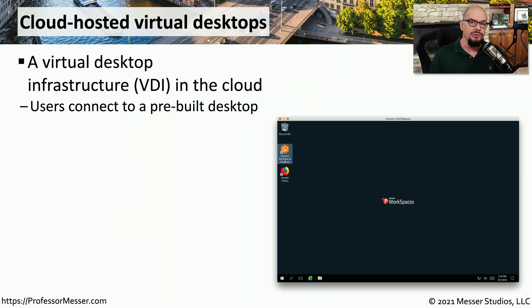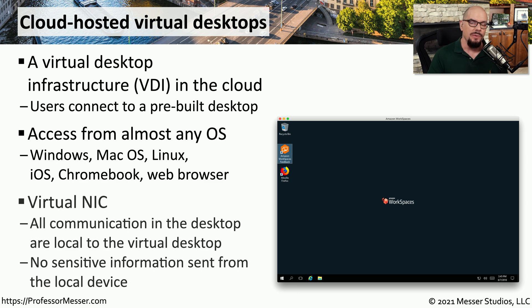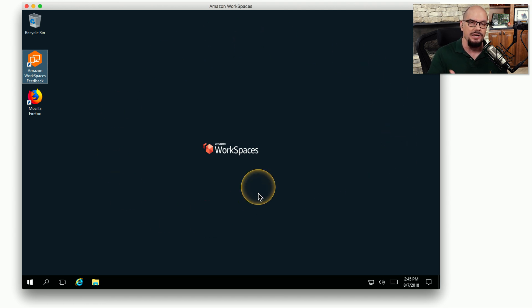In some environments, users don't have a full-size desktop or laptop at their desk. Instead, they have a thin client and connect to a virtual desktop infrastructure, or VDI. If you move that VDI to the cloud, you can have a cloud-hosted virtual desktop and access nearly any operating system from your browser. In almost all of these implementations, the communication from your local machine to the cloud-based virtual desktop is over an encrypted channel, very similar to a remote desktop connection, keeping all communication secure.